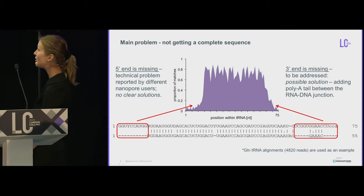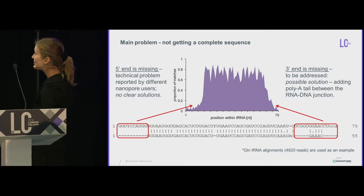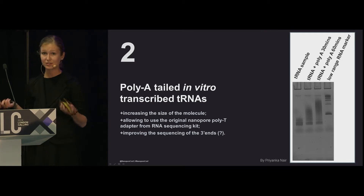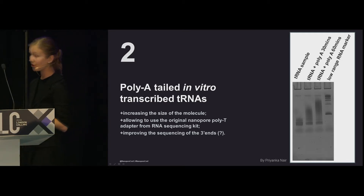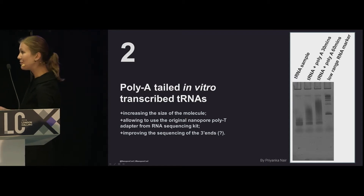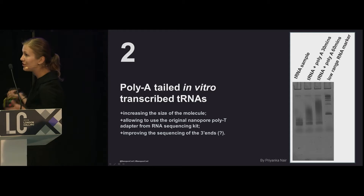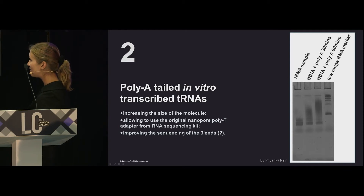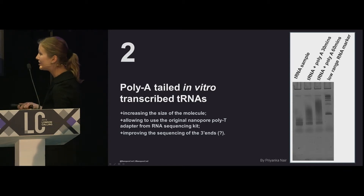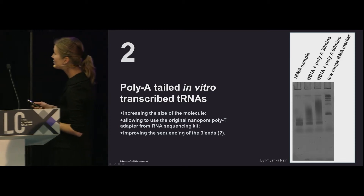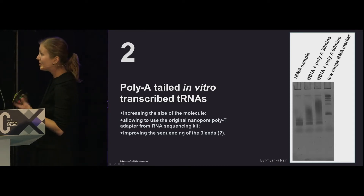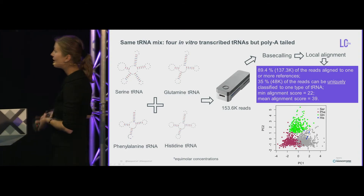Our possible solution: why not poly-A tail our tRNAs to make them similar to regular RNAs? That's what we did — we increased the size of the molecule, which might also increase the quality of the sequences since they are really ultra-short. We were then able to use the original poly-T adapter without our custom adapters, using the original sequencing kit. Poly-A tails were added successfully, though to different extents, but we don't care how long they are.